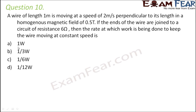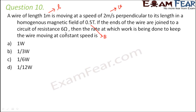A wire of length 1 meter is moving at a speed of 2 meters per second. Velocity and length are given. Perpendicular to its length in a homogeneous magnetic field of 0.5 tesla — B is also given. The ends of the wire are joined to a circuit of resistance 6 ohms.